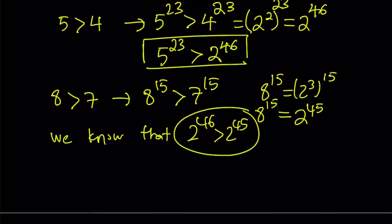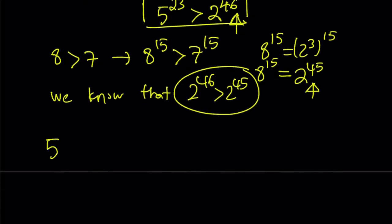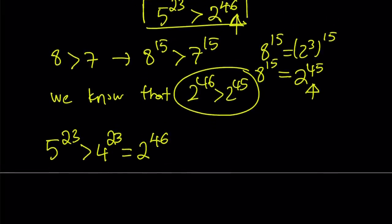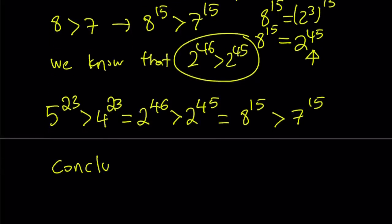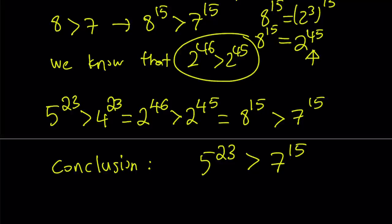Why did I compare 2 to the power 46 to 2 to the power 45? Because here we have 2 to the power 46, and we know that 8 to the power 15 is equal to 2 to the power 45. So let's put it all together and arrive at the conclusion. We have 5 to the power 23 is greater than 4 to the power 23, which equals 2 to the power 46, which is greater than 2 to the power 45, which equals 8 to the power 15, which is greater than 7 to the power 15. The conclusion is 5 to the power 23 is greater than 7 to the power 15. So 5 to the power 23 wins — that's the greater number.